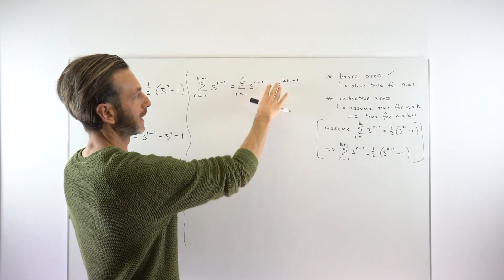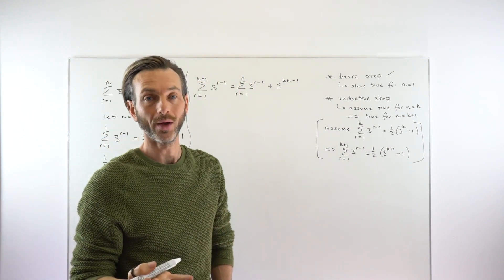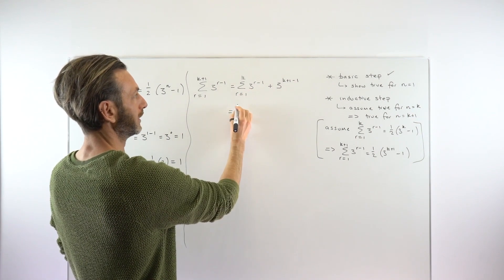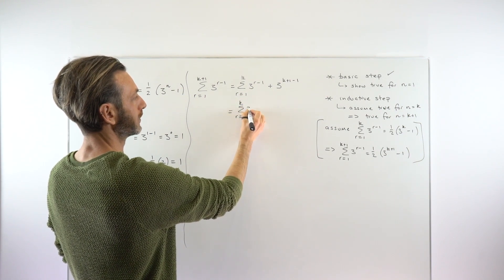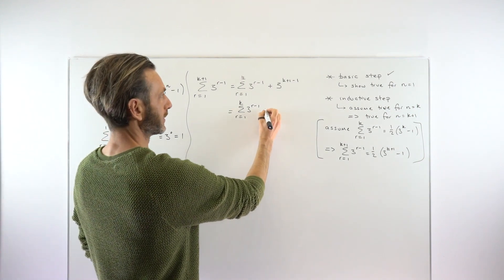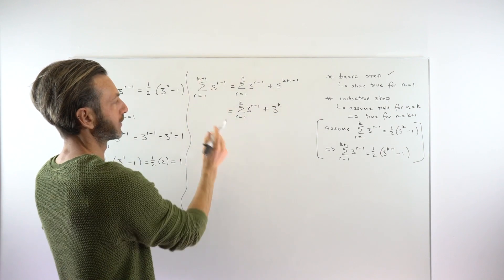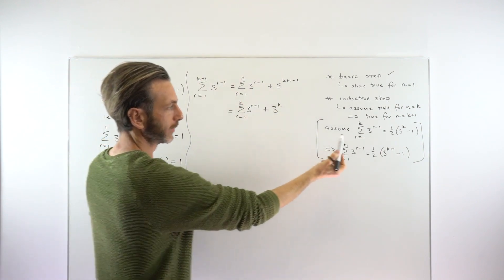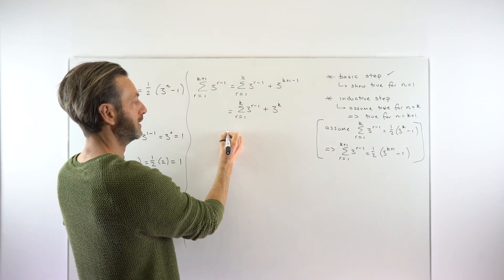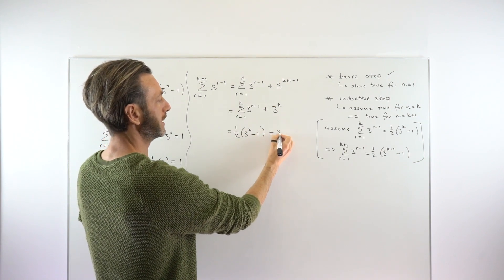After some working — and it's not necessarily easy — we get from here to the result we're looking for. The final term simplifies: k plus 1 minus 1 is just k, so that becomes plus 3 to the power of k. At this point, the first part of the split summation matches our assumption exactly, so we can substitute: it equals one half times (3 to the power of k minus 1), plus 3 to the k.